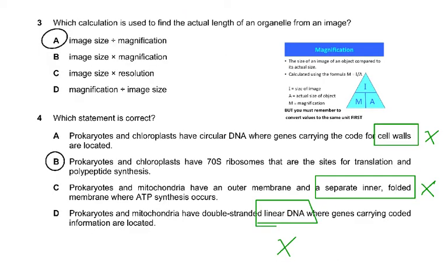Question three asks which calculation is used to find the actual length of an organelle from an image. The formula is: magnification (M) equals image size (I) over actual size (A), i.e., M = I/A. To find the actual length, rearrange to: actual length = image size divided by magnification. The other answer options are all wrong based on this formula.